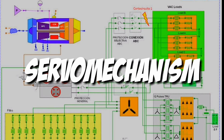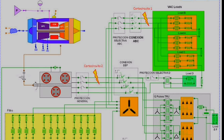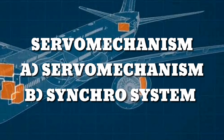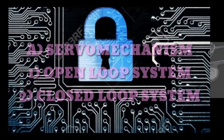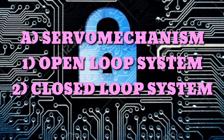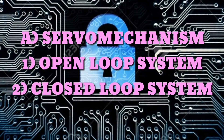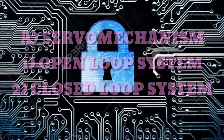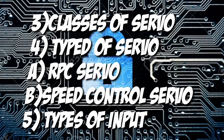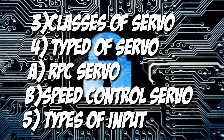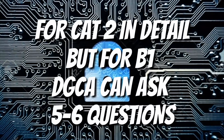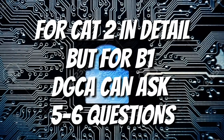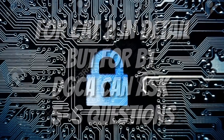Next comes the most important topic after diode: servomechanism, which is the last topic to study for Module 4. We need to study servomechanism in two main parts — servomechanism itself and the synchro system. In servomechanism, we have two types: open loop and closed loop system. Remember, the closed loop system contains an error detector and feedback system. Apart from this, we have classes of servomechanism categorized into four subtopics, types of servo including RPC and speed control, and types of input. For category B2, servomechanism is studied in detail, but for B1, DGC can ask only level 1 questions — about 5 to 6 questions.